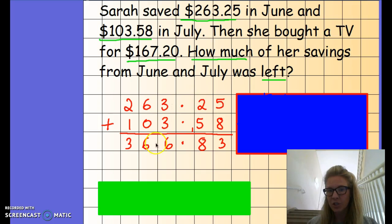So we would use column addition, okay, of the decimals. So you must make sure your decimal place is in a square of its own, okay? And we have added together starting from the hundredths column on the right, and we work our way across the left using column addition. So, so far, Sarah has saved $366.83.